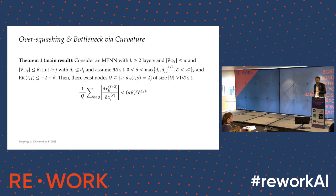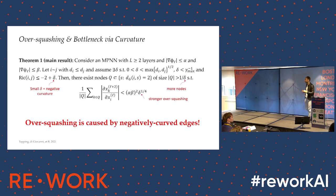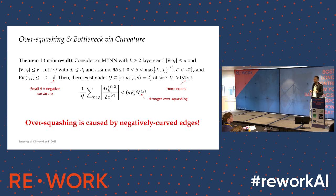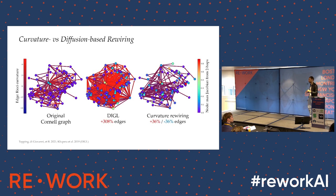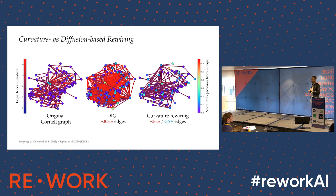We can prove that if a graph has strongly negatively curved edges, those edges are bottlenecks that contribute to over-squashing — negative curvature is to blame for the difficulty of propagating information. Once we know this, we can rewire the graph surgically: removing these negatively curved edges and replacing them with edges of higher curvature significantly facilitates information propagation and improves learning, without dramatically changing the overall graph structure.